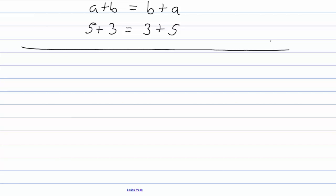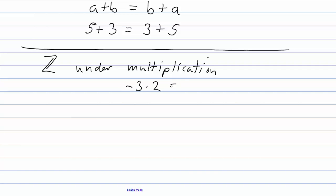Now suppose we look at a related example: the integers under multiplication. We know we can multiply two integers to get another integer — for example, negative 3 times 2 is negative 6. So we might ask: does the set of integers form a group under multiplication? Let's think about it. First, is multiplication associative on the integers?